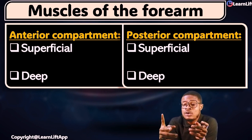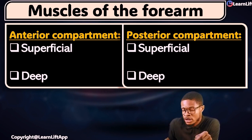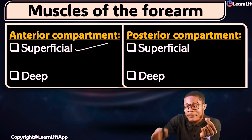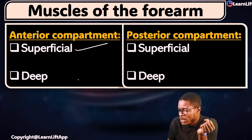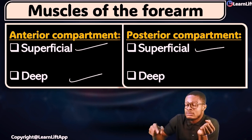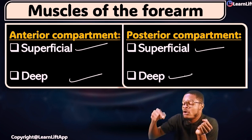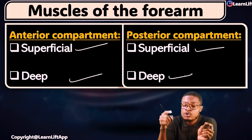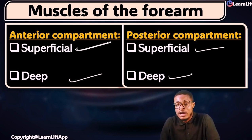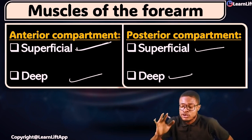What are we going to start with? That means we are going to have four classes on the forearm alone. We are going to have the first class as the superficial anterior compartment muscles of the forearm, then the deep anterior compartment muscles, then the superficial posterior compartment muscles, and then the deep posterior compartment muscles. We are going to start with the superficial anterior compartment muscles of the forearm.